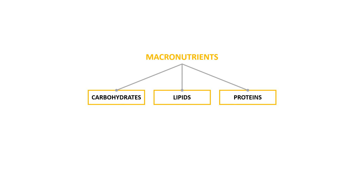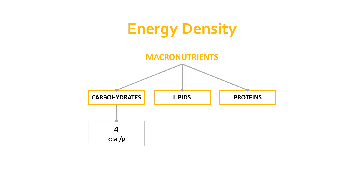Let's begin with a quick recap on what the macronutrients actually are. There are three macronutrients in our diet — macronutrients are simply those parts of the diet that we need to consume in large quantities. We have carbohydrates, we have lipids, and we have proteins. From the perspective of providing energy, each macronutrient has a different energy density — a measure of how much energy is in a single gram. Carbohydrates provide approximately four calories per gram, lipids or fats provide nine calories per gram, and proteins, similar to carbs, four calories per gram.